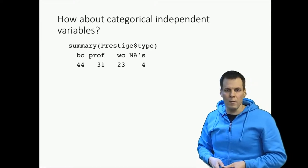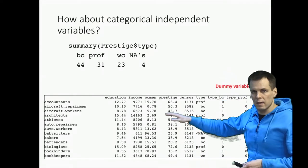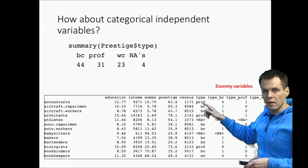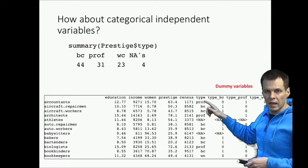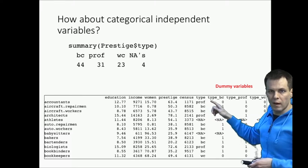We use something called dummy variables. So we code our data like that. That's a subset of our data with the variable type here. Each observation gets a dummy, gets a code for one of the dummy variables.